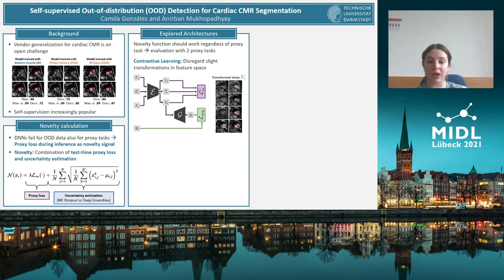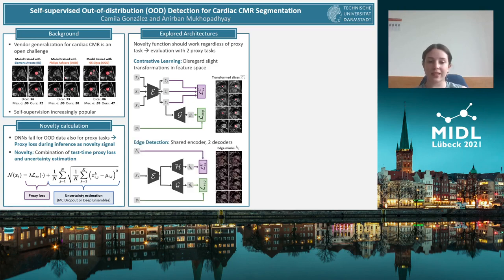Below, we see the part of the architecture that does regular segmentation in green. As a second architecture, we explore edge detection. The edge detection architecture has a shared encoder and two decoders: one for semantic segmentation and one for the detection of edges. We use the Canny edge algorithm to generate our ground truth edge masks.